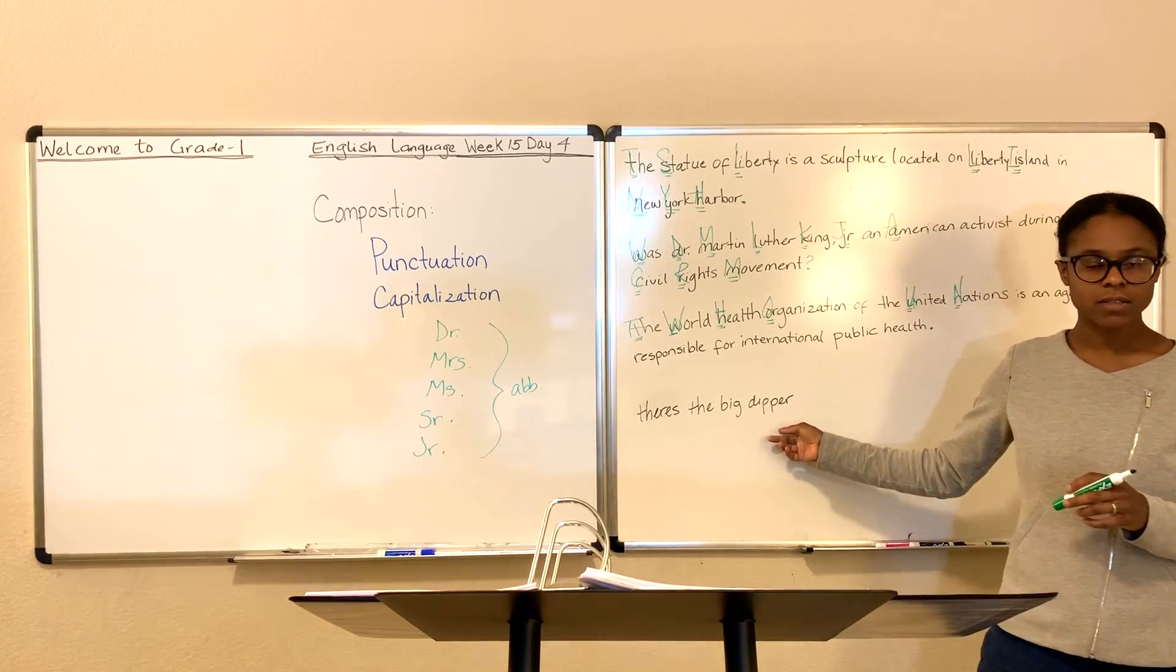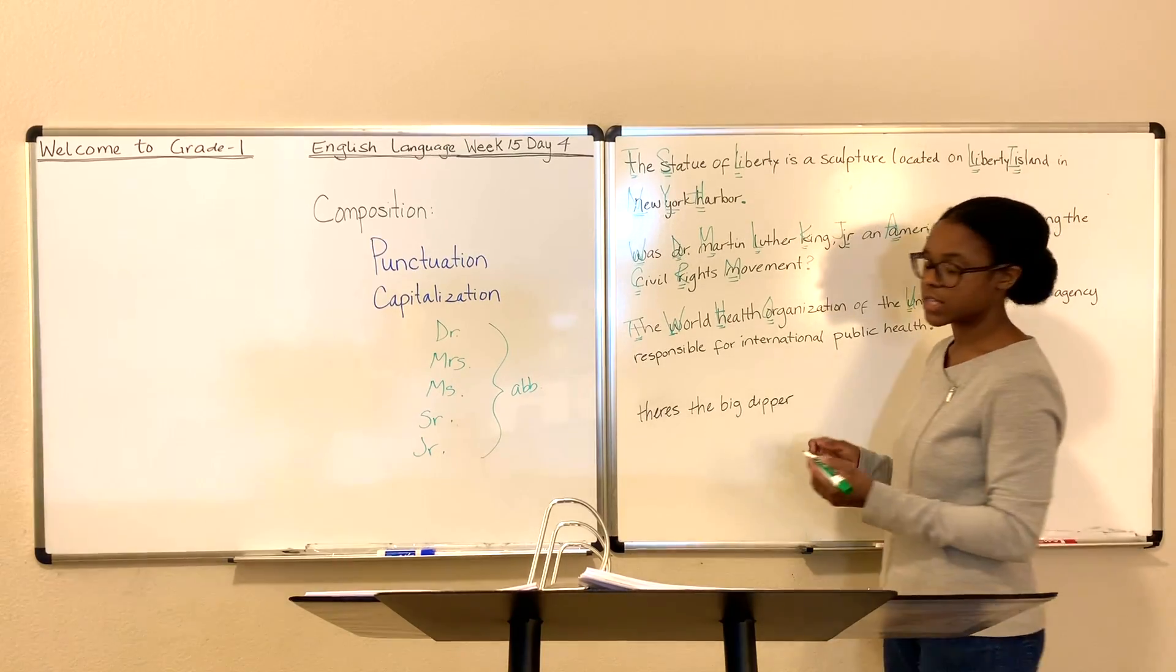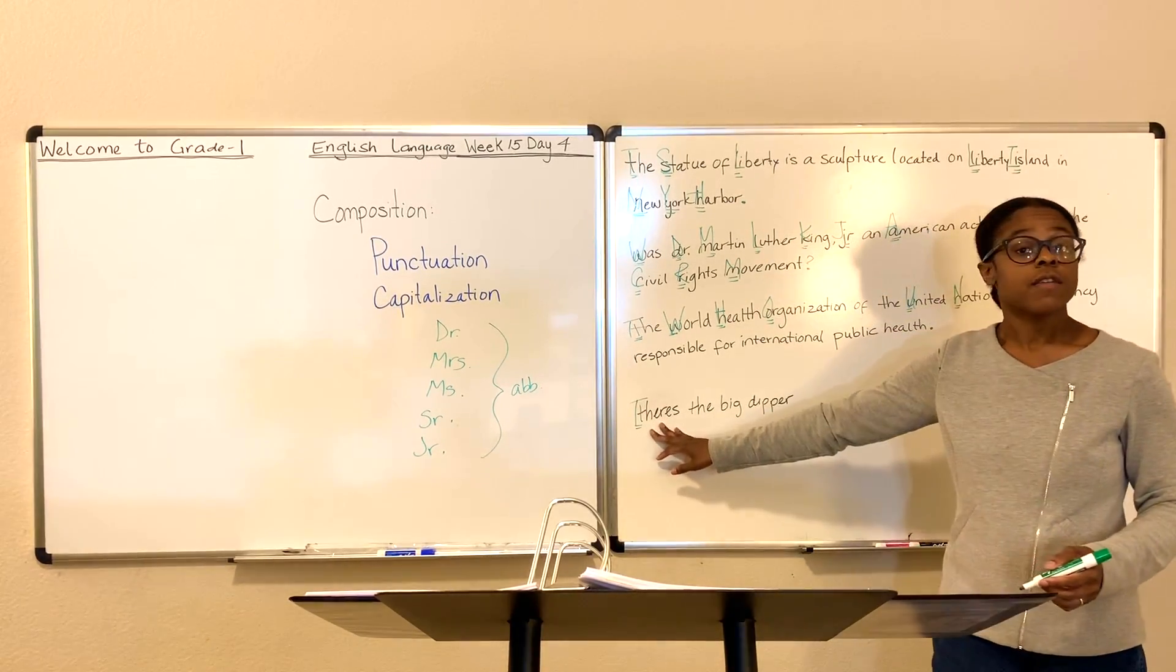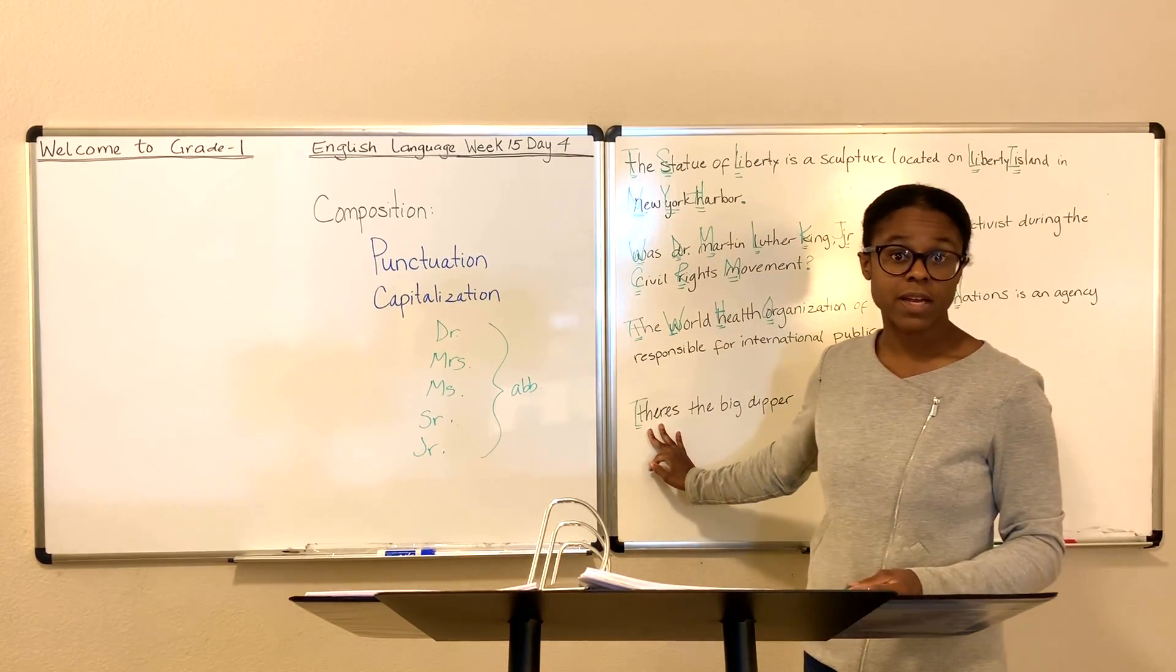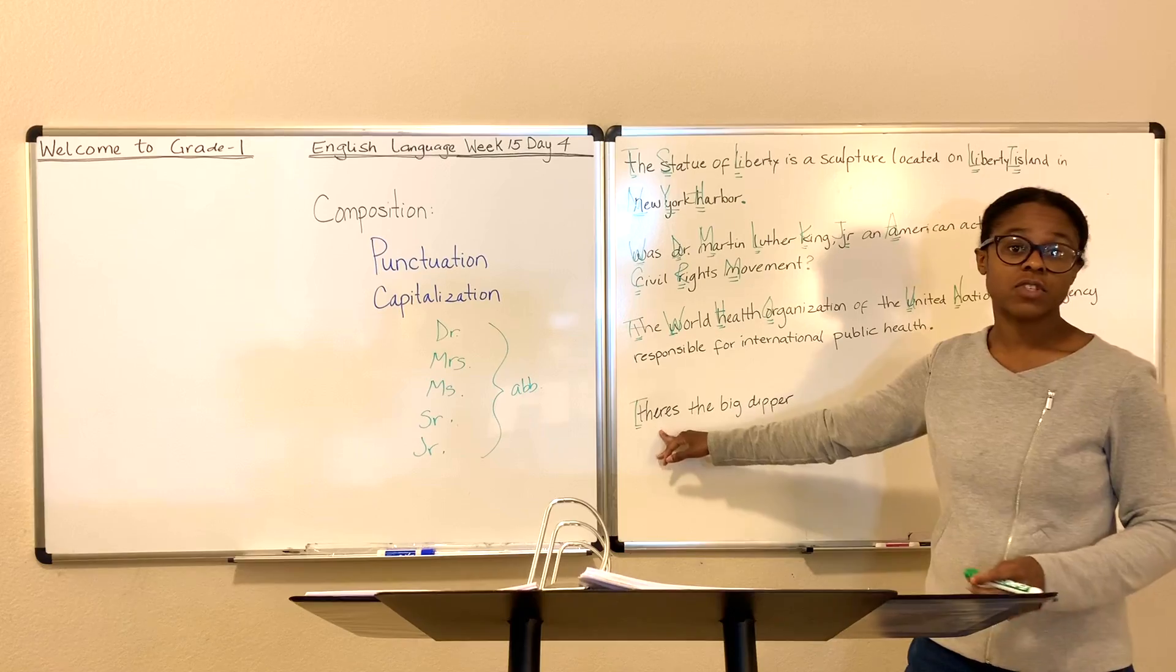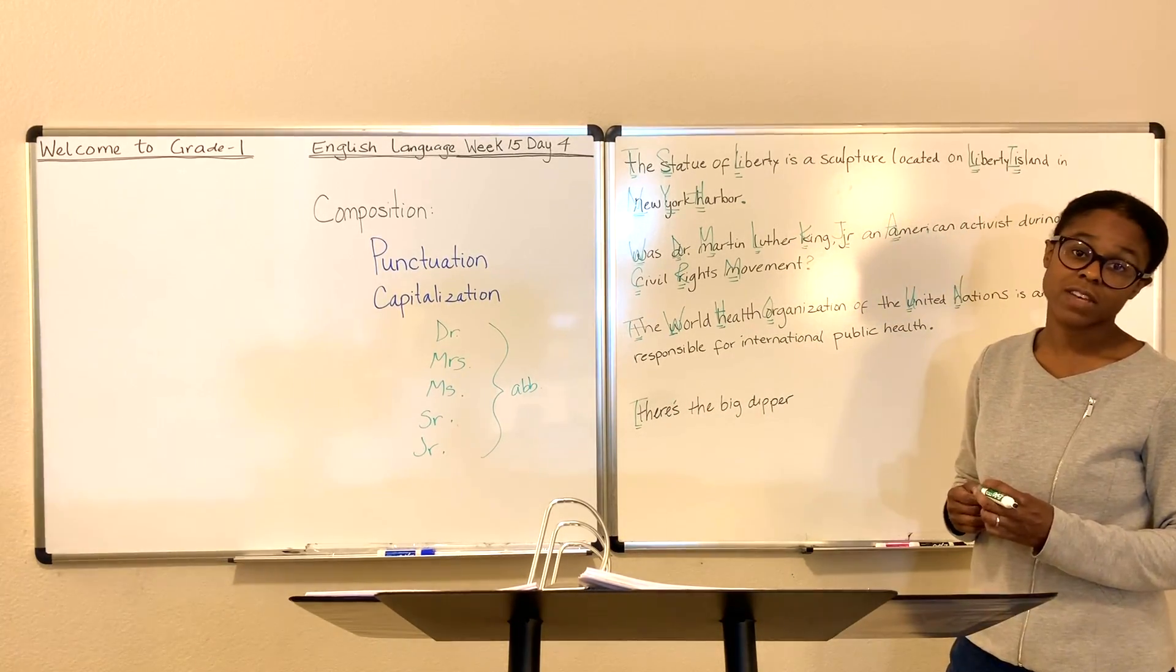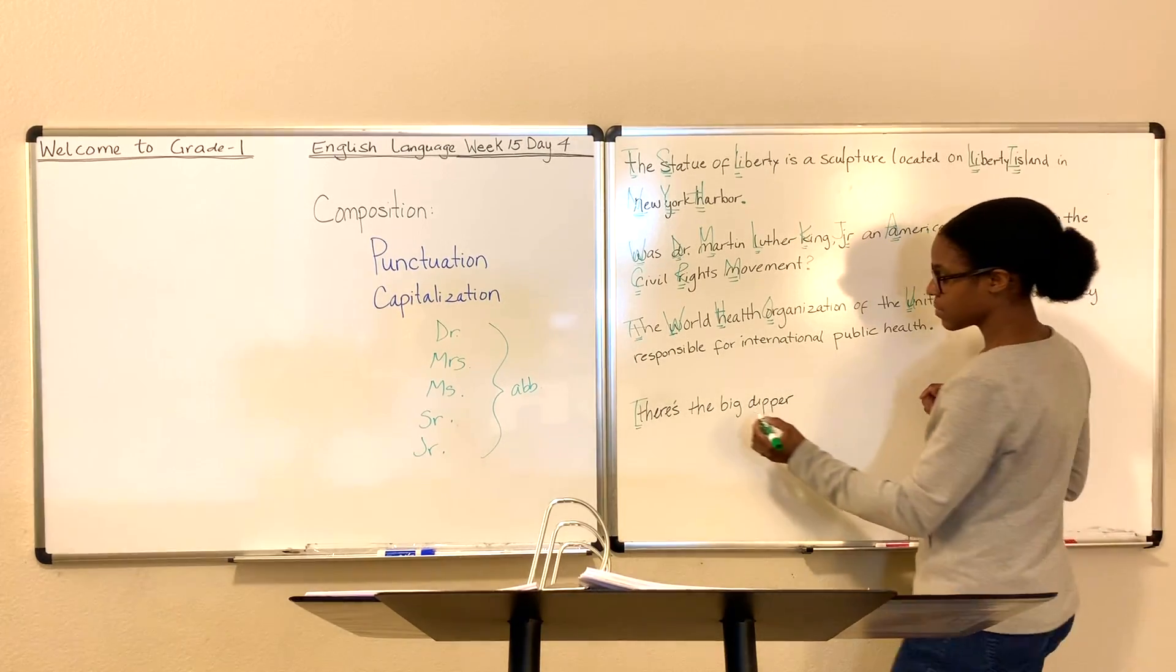There's the big dipper. There's the big dipper. Starting with the first word in the sentence. What are we going to do about this T? Capitalize it. This word is theirs. What do we do? We collapsed two words and made it a conjunction. So what do we have to do? We need to show this by using an apostrophe in front of the S. Big dipper. What are we going to do about big dipper? Are we going to capitalize the B and D?